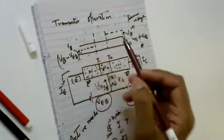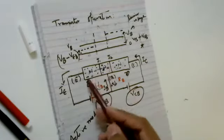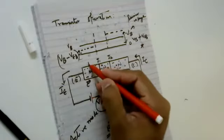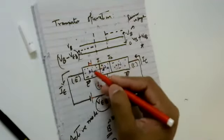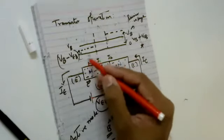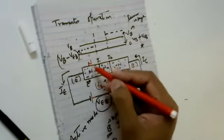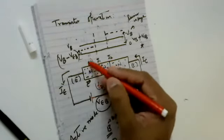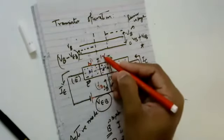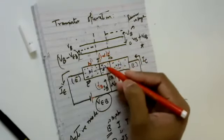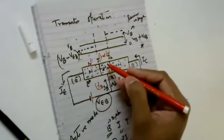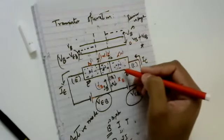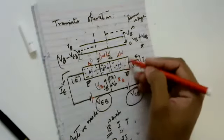Since the junction is forward biased, more electrons come out of the emitter side. Let N be the number of electrons ejected from the emitter. Then (1 minus alpha)×N is the number of electrons on the base, and alpha×N is the number of electrons on the collector side.